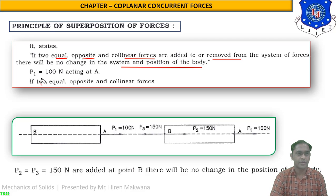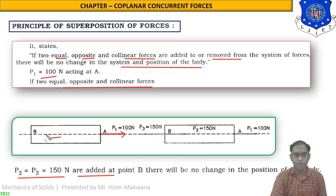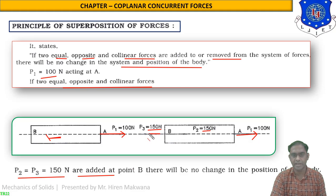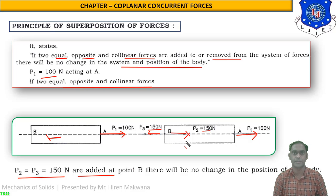For example, force P1 equal to 100 N is acting at point A on body AB. If two equal and opposite collinear forces P2 = P3 = 150 N are added to the same body, the 100 N force P1 remains as it is. P2 and P3 have the same value but opposite nature, so they do not affect the system. This is the principle of superposition.